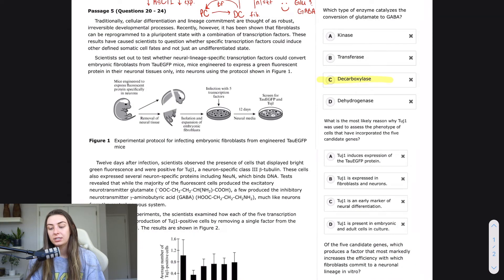The next question says, what is the most likely reason why TOOGE1 was used to assess the phenotype of cells that have incorporated the five candidate genes? So this one seems a little bit more difficult, a little bit more wordy, but they're totally just beating around the bush to make this question seem more difficult than it actually is. Let's kind of get this last part to where it's not so wordy. It says to assess the phenotype of cells that have incorporated the five candidate genes.